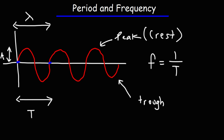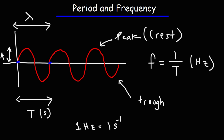The frequency is the inverse of the period — it's 1 over T. The period is typically measured in seconds, though it could be minutes or hours. The standard unit for frequency is Hertz, so one Hertz is one second to the minus one, or 1 over s.